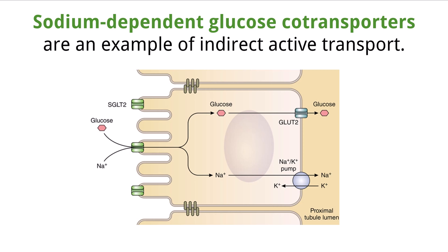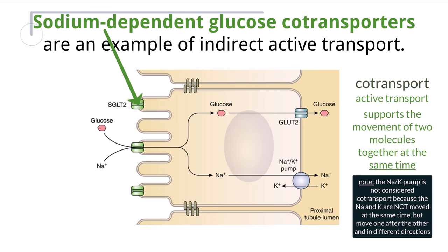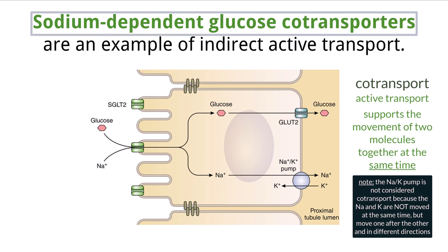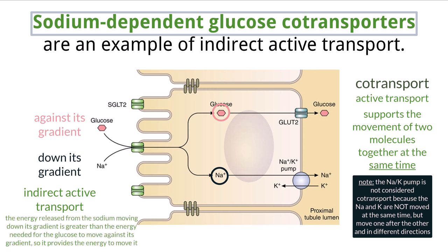Moving on to other types of membrane transport, there is another type you need to know for the higher-level curriculum called co-transport. Co-transport is a type of active transport, meaning energy is being used, that supports the movement of two molecules across the membrane together in unison. The example you need to know is the sodium-dependent glucose co-transporter. A sodium ion is moved down a concentration gradient together with a glucose molecule that is moved against its concentration gradient. This is indirect active transport because the energy released from sodium moving down its gradient is greater than the energy needed for glucose to move against its gradient.